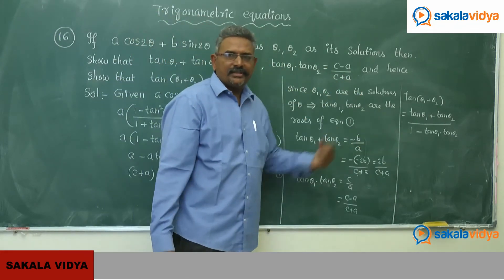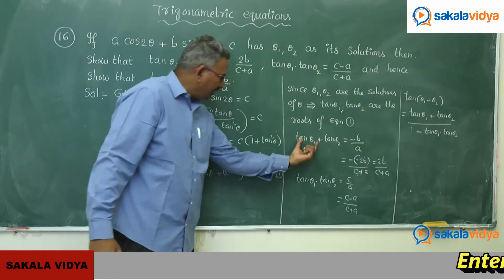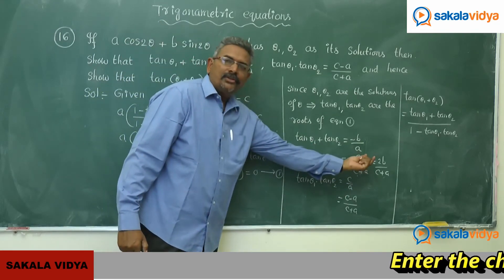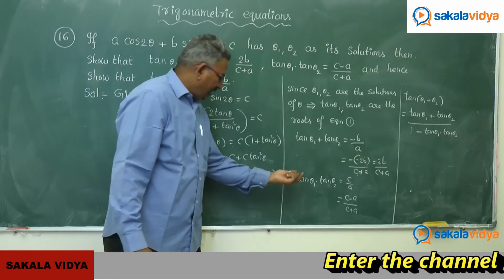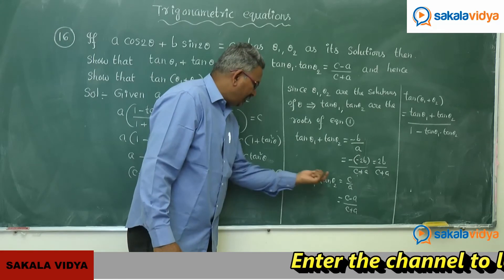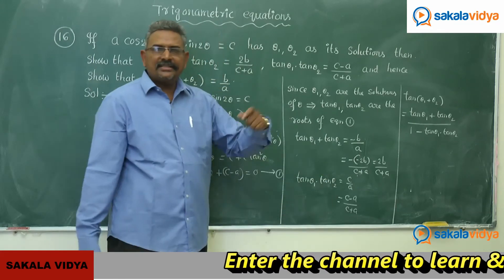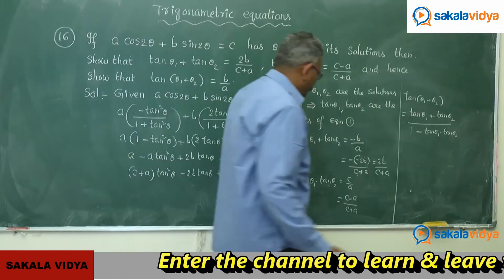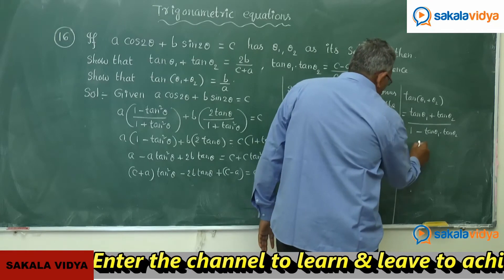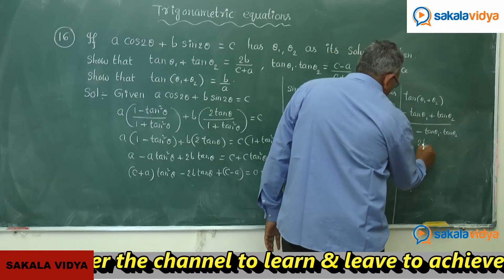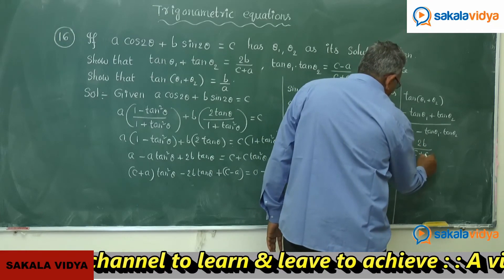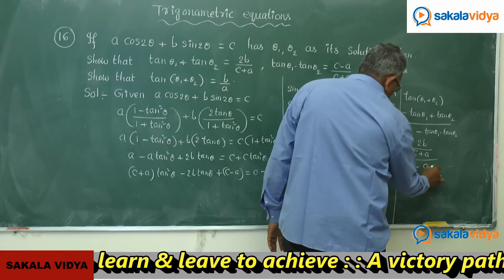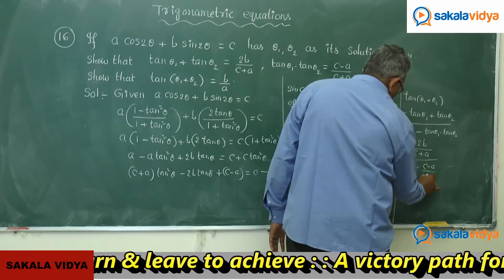Now the respective values are to be substituted. tan θ₁ + tan θ₂ = 2b/(c+a), whereas tan θ₁ · tan θ₂ = (c−a)/(c+a). So substituting: [2b/(c+a)] / [1 − (c−a)/(c+a)].